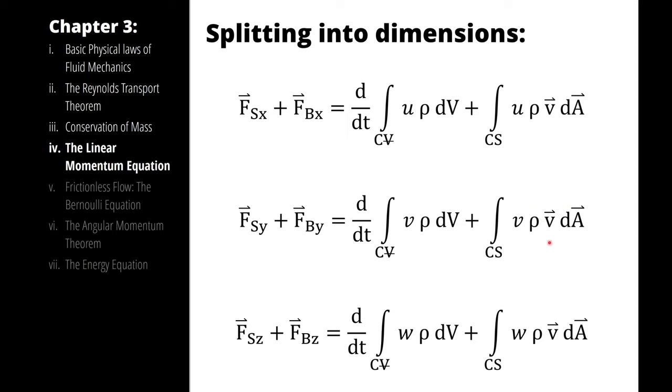Because this velocity vector times this area vector is how we are keeping track of our flow rate across the control surface.